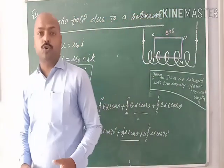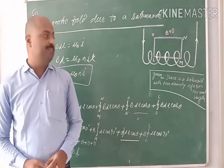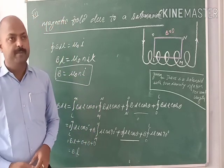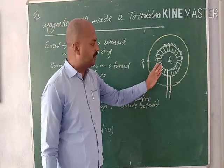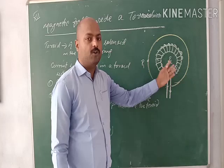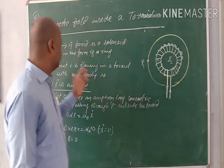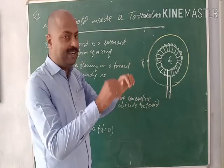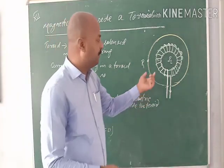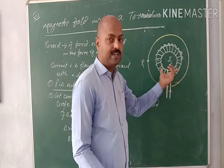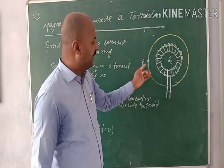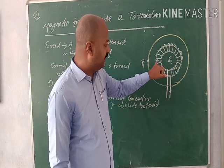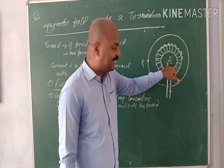Now we are going to discuss what a toroid is and how to find the magnetic field inside the toroid, outside the toroid, and on the toroid. A toroid is a solenoid in the form of a ring — this solenoid is made in the form of a circular ring, so it is known as a toroid. We want to find the magnetic field at points P1, P2, and P3.